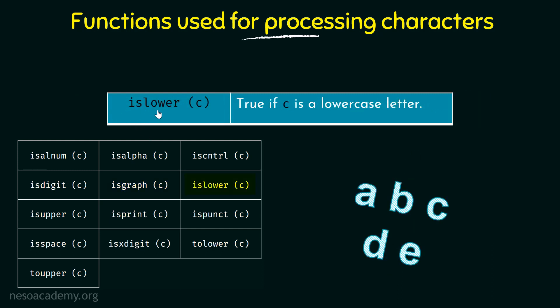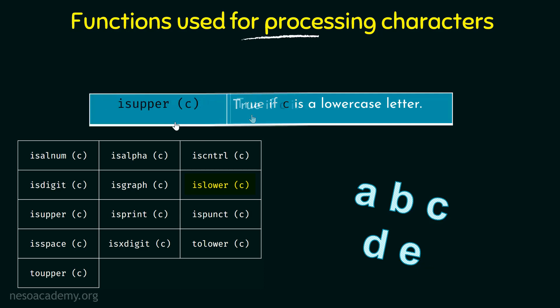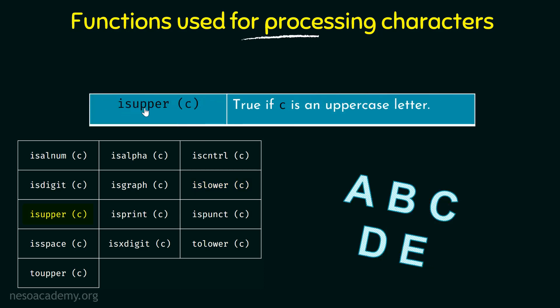Next we have ISLOWER, which checks if the character is a lowercase letter. If it is a lowercase letter then it returns true, and if it is an uppercase letter it returns false. Similarly we have ISUPPER as well. ISUPPER checks if the character C is an uppercase letter — if it is uppercase it returns true, and if it is lowercase it returns false.